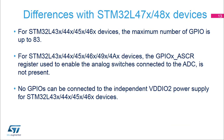This slide presents the key differences between baseline STM32L47x/48x devices and other devices. Compared to STM32L47x/48x devices, STM32L43x/44x, 45x, and 46x devices have up to 83 GPIOs. They no longer have GPIOs connected to an independent power supply VDD IO2, and the GPIOX ASCR register enabling an analog switch connected to the ADC inputs is no longer present.